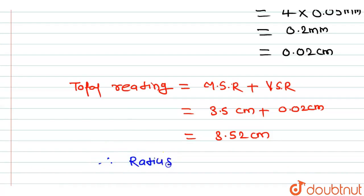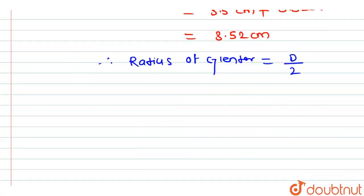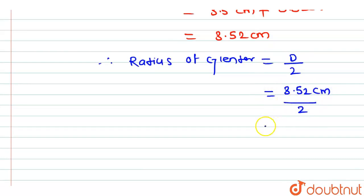Therefore, radius of cylinder = diameter / 2 = 3.52 cm / 2 = 1.76 cm. So, 1.76 cm is the value of the radius of the cylinder.